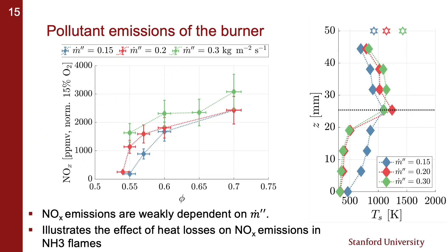If we now focus on NOx emission as a function of equivalence ratio and burner mass flux, we see a fairly important increase in NOx production with increasing mass flux, especially near the lean limit. We speculate this is caused by the difference in operating temperature between the cases, as the exhaust temperature of the burner is quite a bit lower at a flow rate of 0.15 than at 0.3 kg/m²/s.